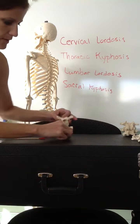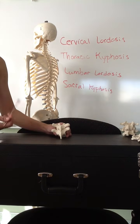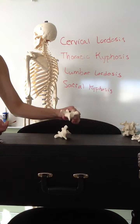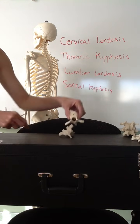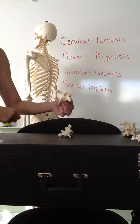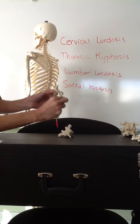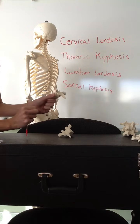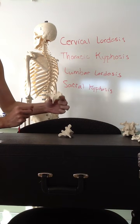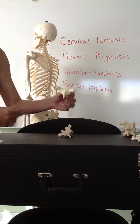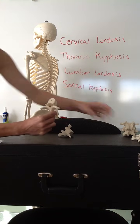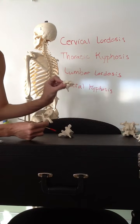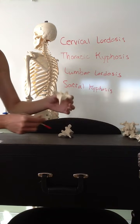We have 7 cervical vertebrae. After those, we get to the 12 thoracic vertebrae. Looking at the thoracic vertebrae, we see they are a little bigger than the cervical vertebrae — they have a bigger body. Also, the spinous process sticking out of the back is very long and pointy, which tells us we're looking at a thoracic vertebra. Additionally, there are no transverse foramina — no holes on the side — and that's how you can identify the thoracic vertebrae.